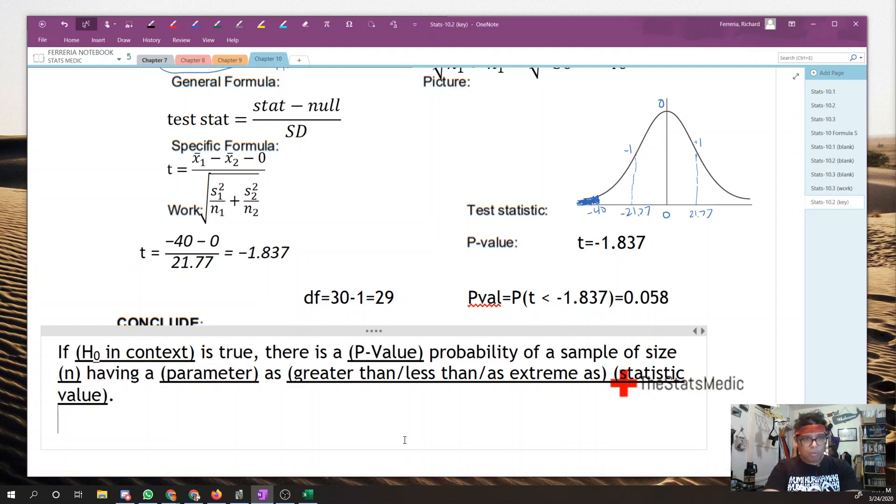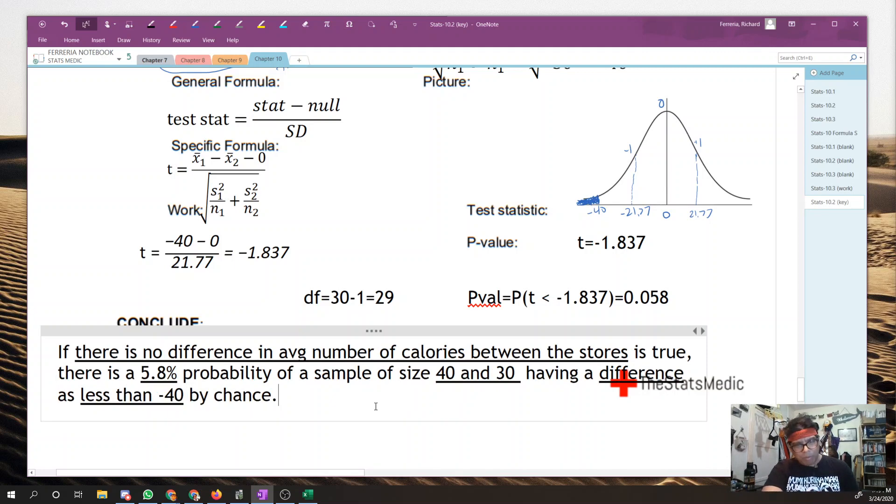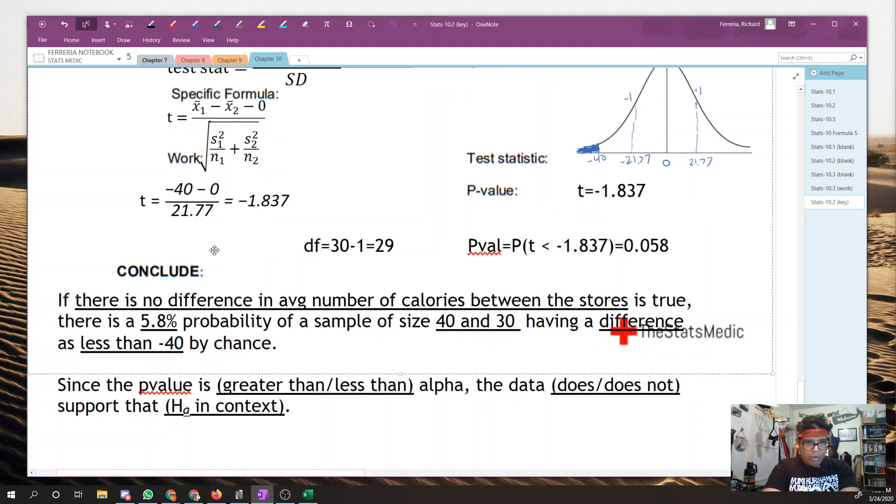Here's that set phrase that goes along with the conclusion of a t-test. Now all you have to do is fill in the blanks. Go ahead and do that. And I'm thinking I gave you the wrong set phrase. This is a set phrase for p-value. So this says that assuming there is no difference in the average number of calories between stores is true, then there's a 5.8% probability of sample sizes of 40 and 30 having a difference as less than negative 40 by chance. So that's not actually for our conclusion. That's interpreting our p-value. Here's that set phrase for the conclusion, hopefully. Now you can go to town, finish up, fill in the blanks. And I'll pause here for you.